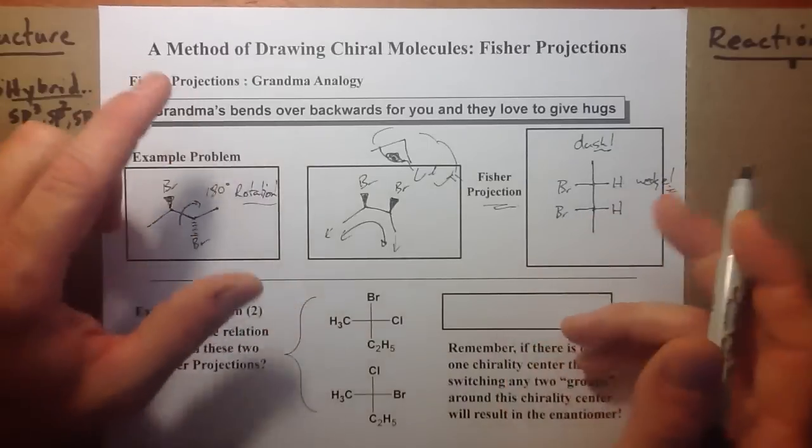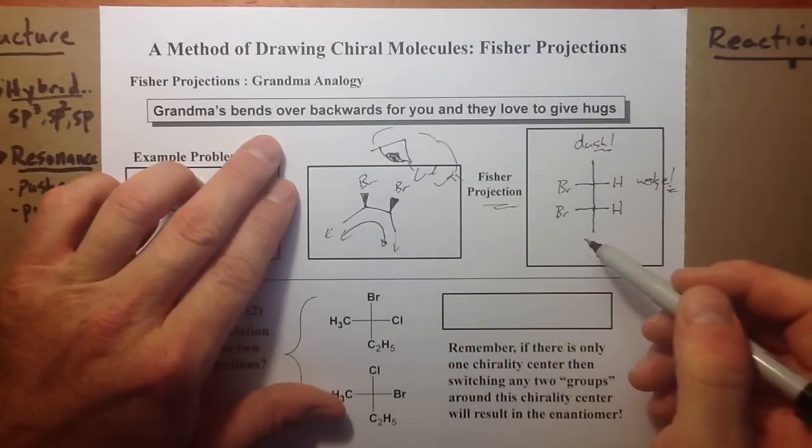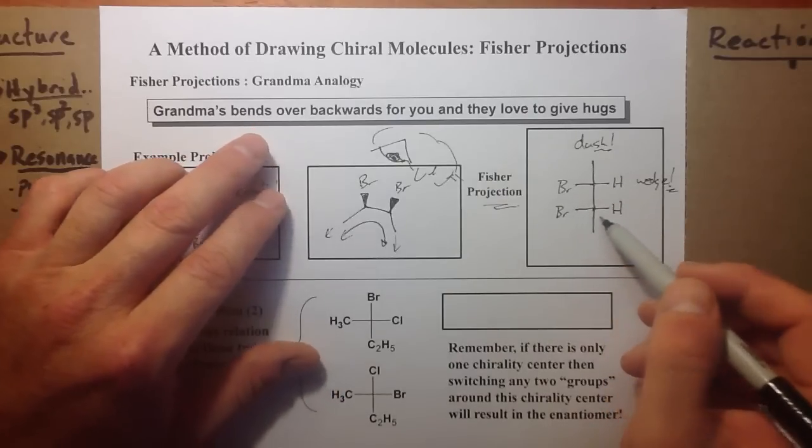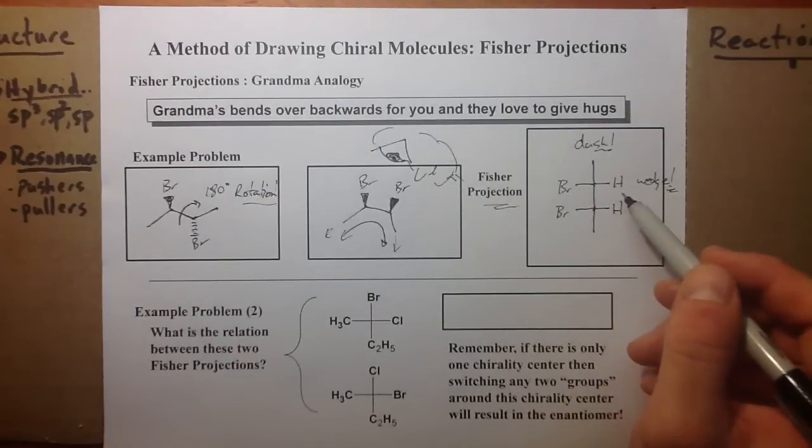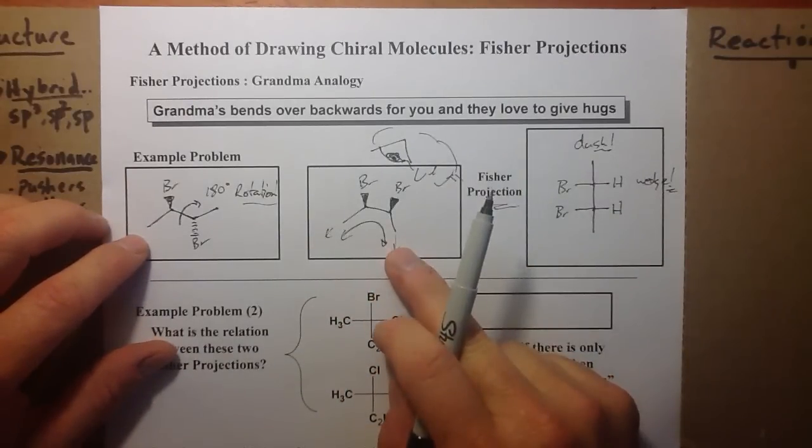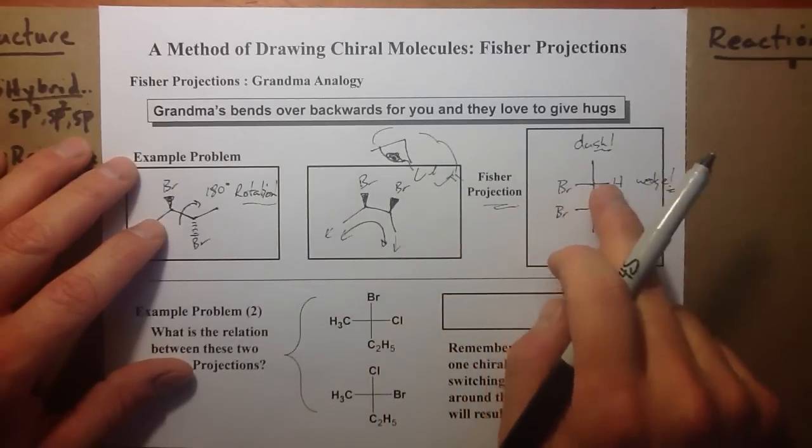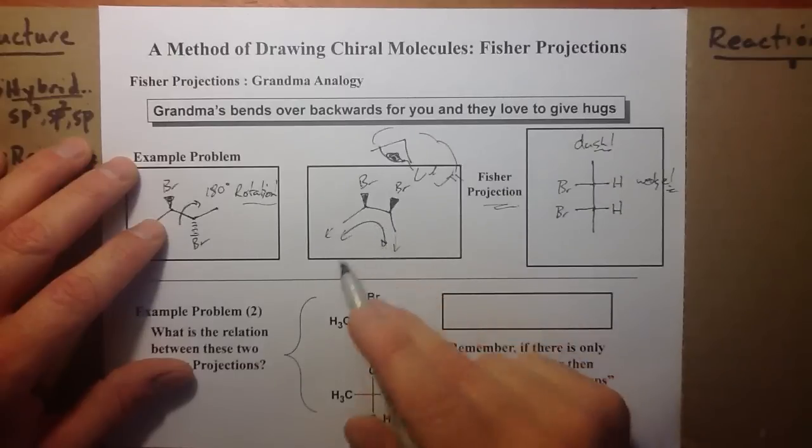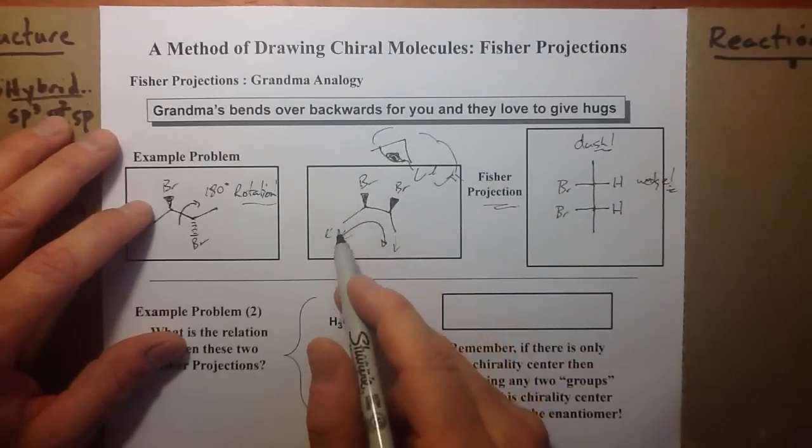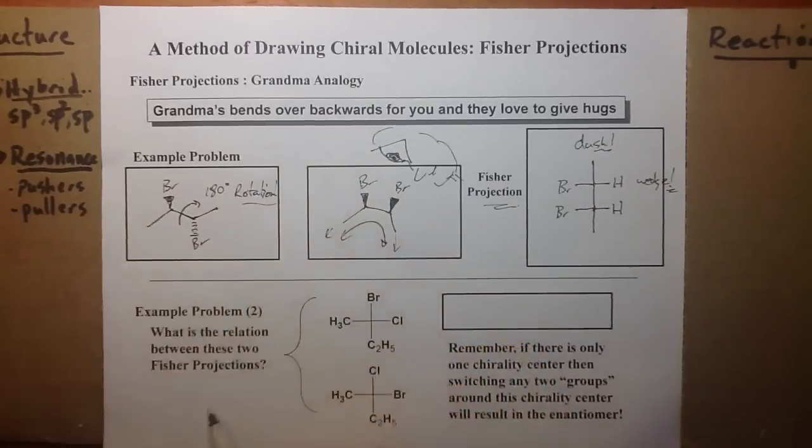I like to tell students, this is the way I break it: My mother-in-law loves our children. She bends over backwards—that's the vertical, that's the backbone—for my grandchildren. And she loves to give them hugs, so her arms are always out, the bromine and the hydrogen. So that's the way we can go from Fischer projection back to a skeletal structure if we needed to.